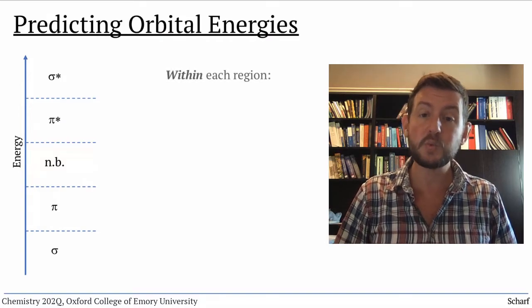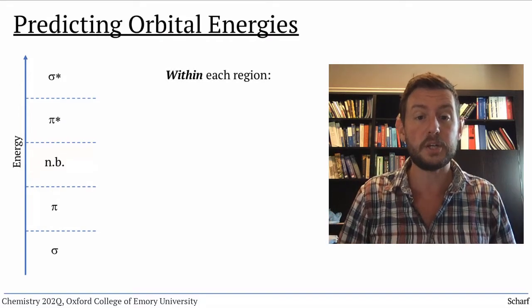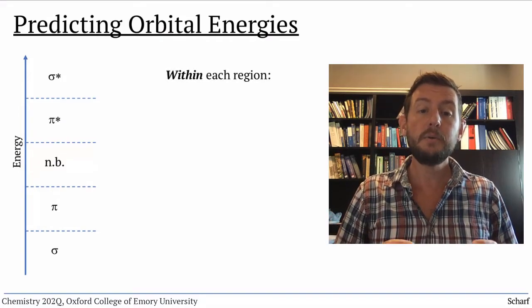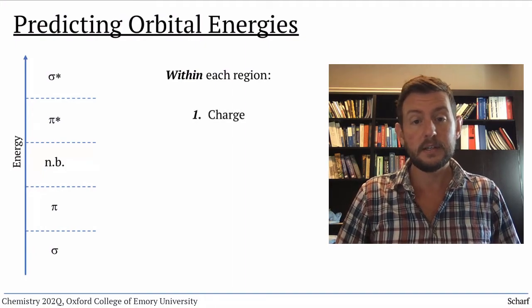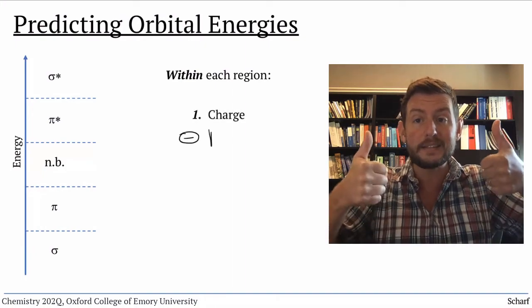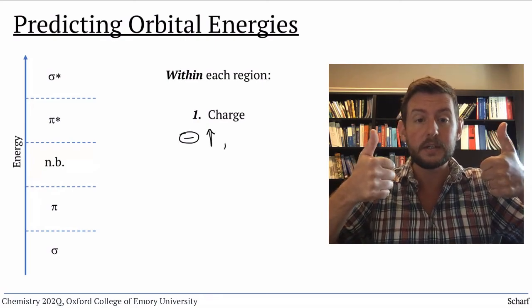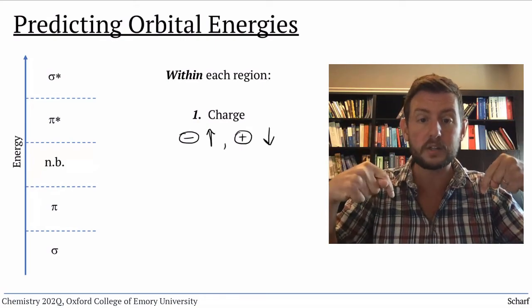There are also trends within each region. The most important trend is with charge. Negative charge raises the energies of orbitals, and positive charge lowers their energies.